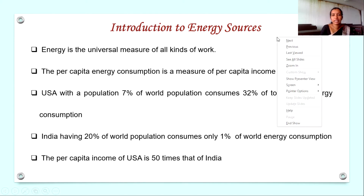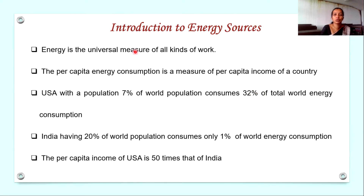All of us know what energy is. We usually define energy as the capacity to do work. But more specifically, energy can be defined as the primary and universal measure of work done by human beings and nature. That is, energy is the universally accepted measure of work done. Everything that happens in nature — every process, every activity — involves the flow of energy in any one of its forms.